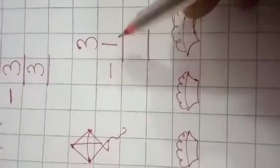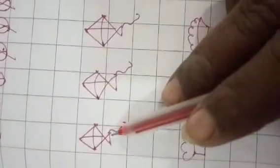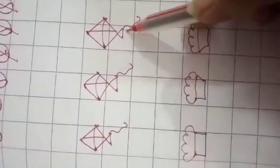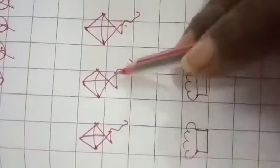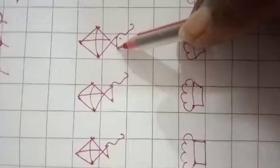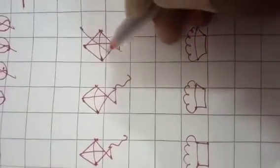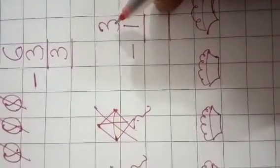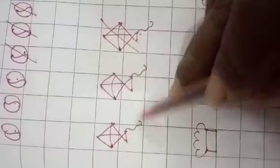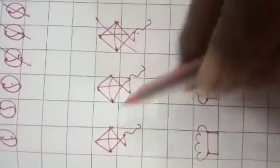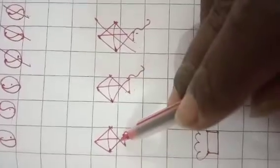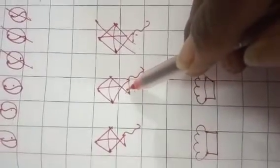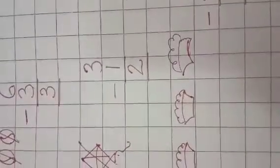Again, 3 minus 1. Now, I have 1, 2, 3 kites. Harshiv? 1, 2, 3 kites. Out of 3, I am going to cut 1. So, count the number of kites, Shireen. 1, 2. So, I am going to write 2.